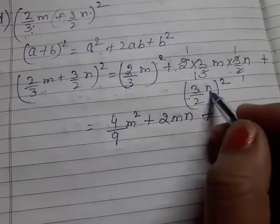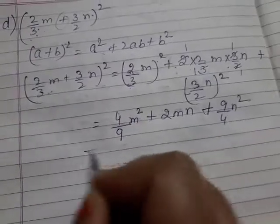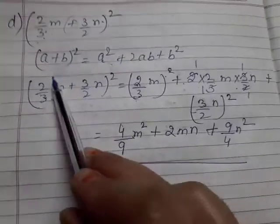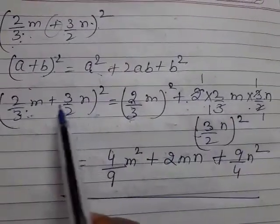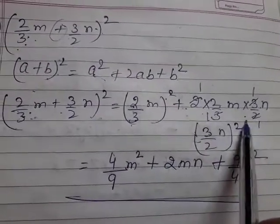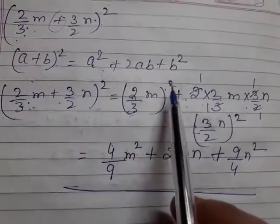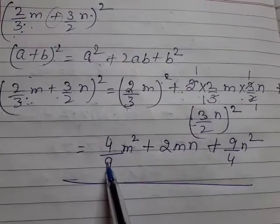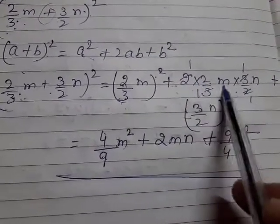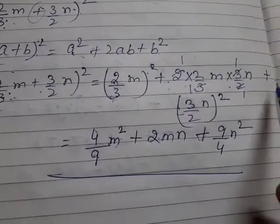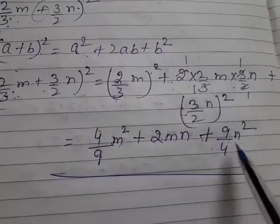So our answer is 4/9 m² + 2mn + 9/4 n². Using a+b whole square which equals a² + 2ab + b², putting the values: (2/3)² = 4/9 m², the 2mn term comes from the fractions cancelling — 2 × (2/3) × (3/2) = 2mn — and (3/2)² = 9/4 n².